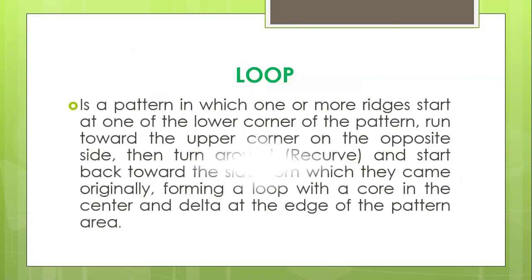So what is a loop? By definition, a loop is a pattern in which one or more ridges start at one of the lower corners of the pattern, run toward the upper corner on the opposite side, and then recurve or turn back from where it started, forming a loop with a core at the center and a delta that can be found within the pattern area.